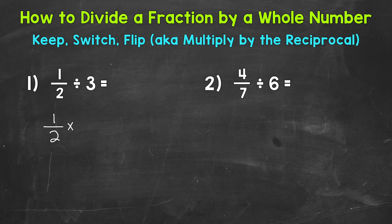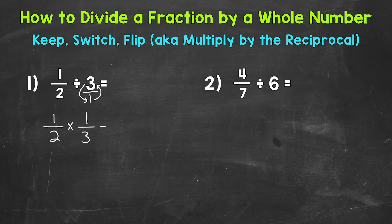In the case of number one, we have a whole three. To flip it, we put that whole number over one — that doesn't change its value, it still equals three. Now we can flip: the one goes to the top as our numerator and the three becomes the denominator. Once we get to this point, we have a multiplying fractions problem. One times one is one, and two times three is six, giving us one sixth. Always check to see if you can simplify — one sixth is in simplest form, so we are done.